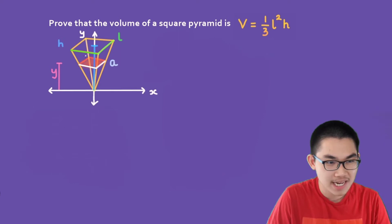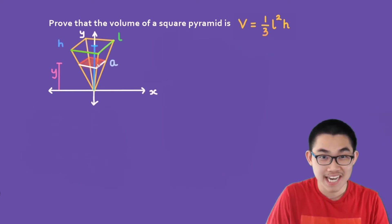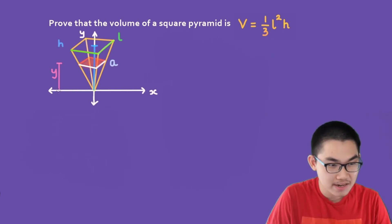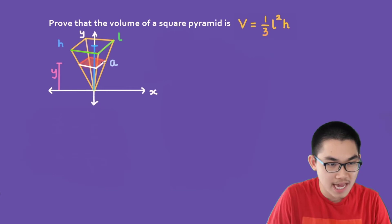If you cut this pyramid right here and look at the cut, you will see a square. The height of this cross-section from here to here is Y, and each side of the cross-section is going to be A — so this side is A, and this side is also A.